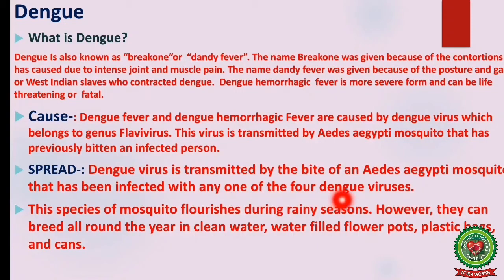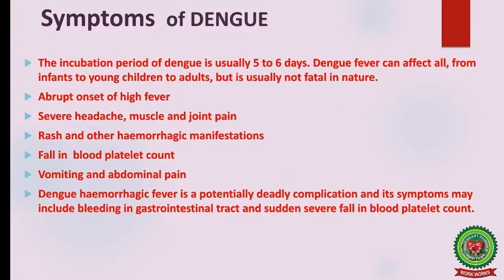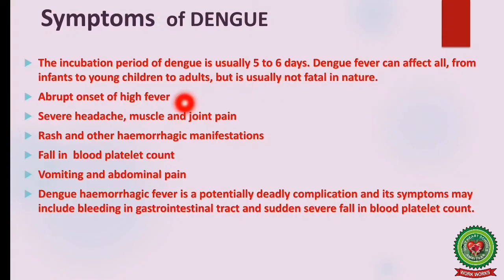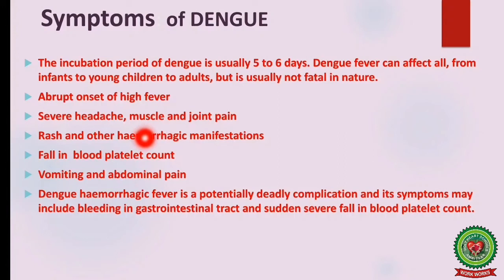The incubation period — the time between when infection enters the body and the first appearance of a symptom — for dengue is usually five to six days. Dengue fever can affect all ages, from infants to adults, but is usually not fatal. Symptoms include abrupt onset of high fever, severe headache, muscle and joint pain (breakbone fever), rash, and other hemorrhagic manifestations, along with a fall in blood platelet count, vomiting, and abdominal pain.